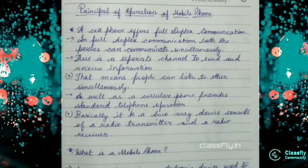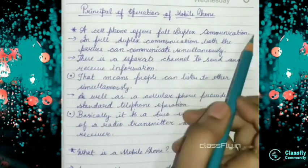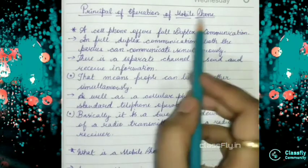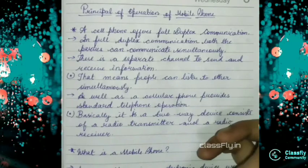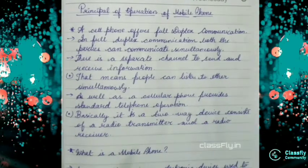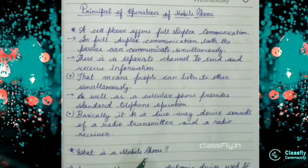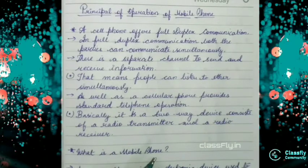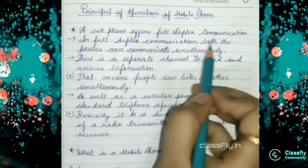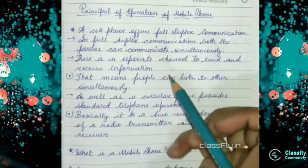So before that we should know that a cell phone offers full duplex communication. Full duplex communication means that both the parties can communicate simultaneously. Think that me and my friend want to contact each other. So we call each other, so we are communicating to each other and we are receiving the talks from each other to know about how we are in this current situation. So in full duplex communication both the parties can communicate simultaneously.